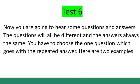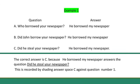Test 6. You are now going to hear some questions and answers. The questions will all be different and the answer is always the same. You have to choose the one question that goes with the repeated answer. Here are two examples. Example 1. Who borrowed your newspaper? He borrowed my newspaper. Did John borrow your newspaper? He borrowed my newspaper. Did he steal your newspaper? He borrowed my newspaper. The correct answer is C because 'He borrowed my newspaper' answers the question 'Did he steal your newspaper?' It's recorded by shading answer space C against number 1.